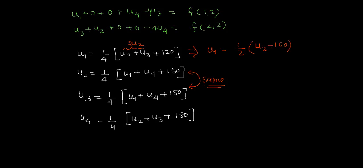And again I will say that u2 equals 1/4 times (u1 + u4 + 150). And from here, again this will be 2 times u2, so u4 equals 1/2 times u2 plus 90.